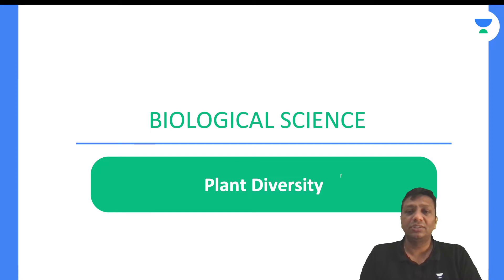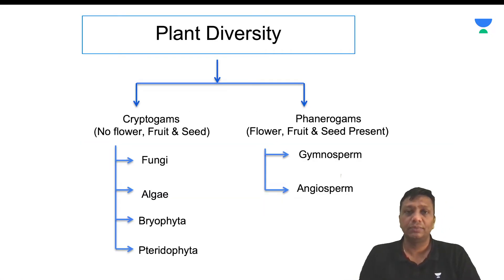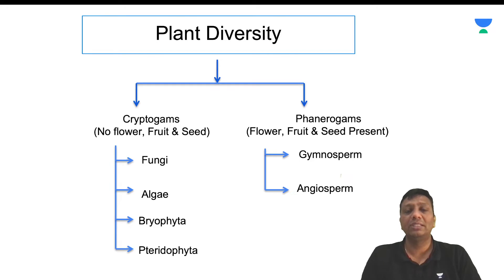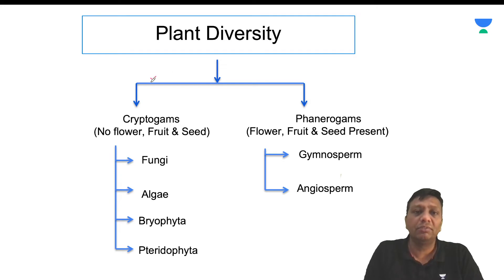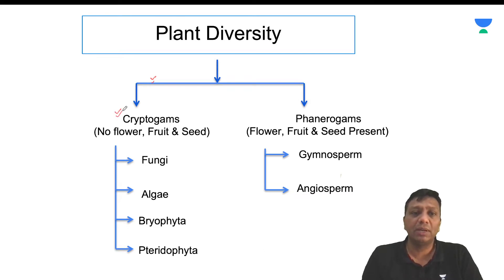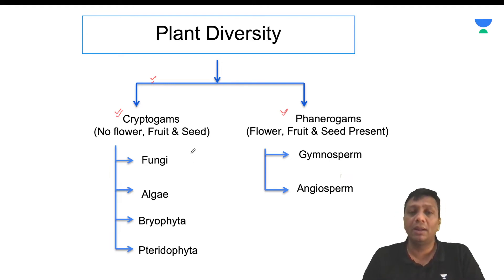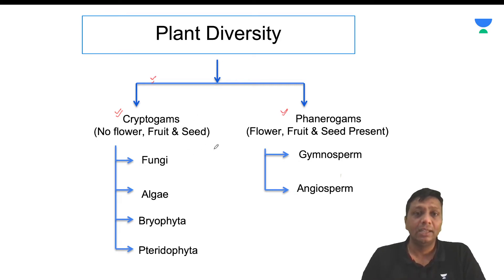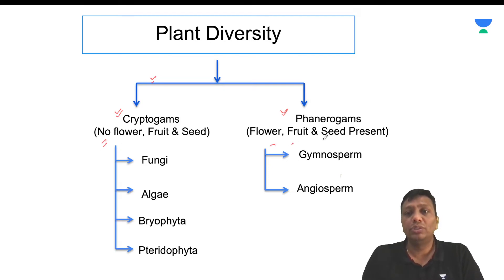This is biological science, and plant diversity is the topic. Overall, plants are defined in a very simple way. Plants are divided into two groups on the basis of flowers, fruit, and seeds. The first is cryptogamous plants and the second is phanerogamous plants. Cryptogamous plants are those where flower, fruit, and seeds are not available. Phanerogamous plants are those where flower, fruit, and seeds are all present.